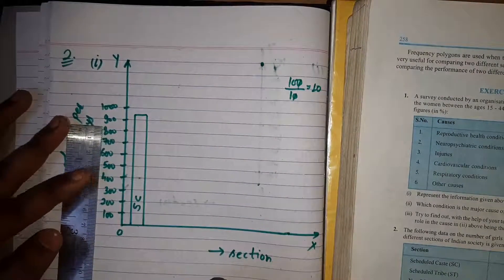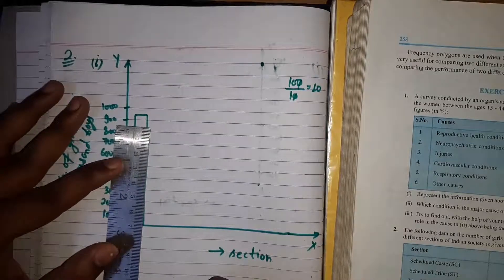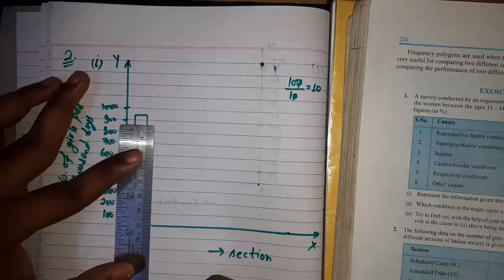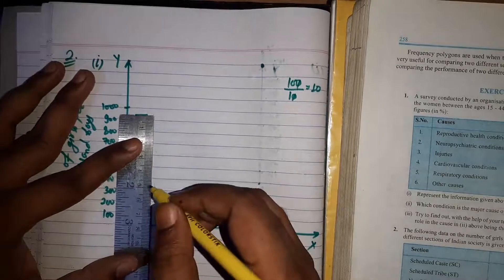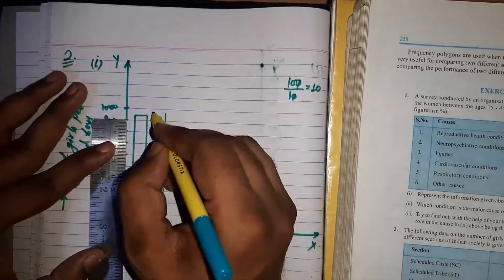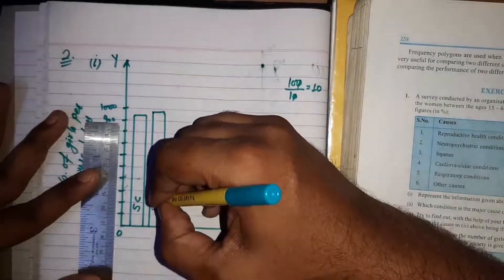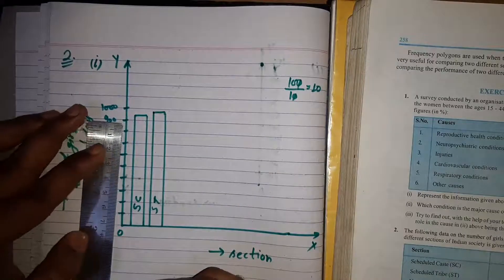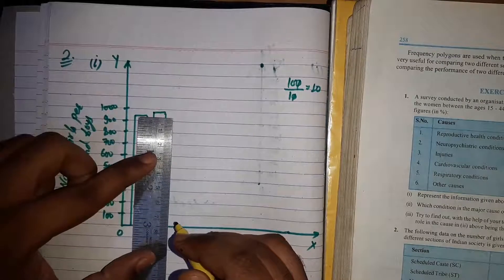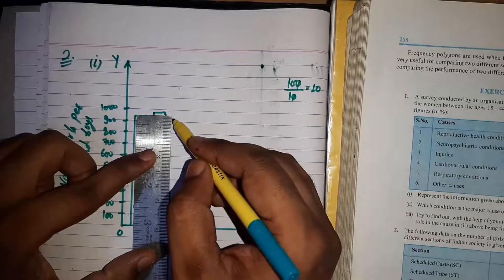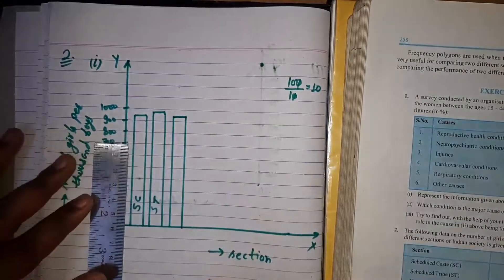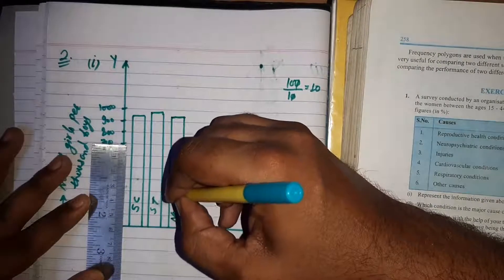The next is scheduled tribe (ST) with frequency 970. For 970, we take the 7th line between 900 and 1000. The next is non-SC and non-ST with frequency 920, so we take the 2nd line between 900 and 1000.